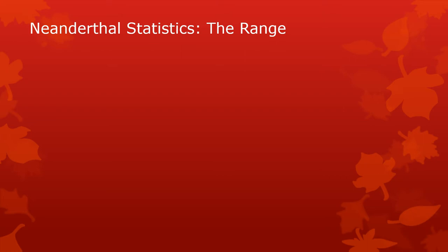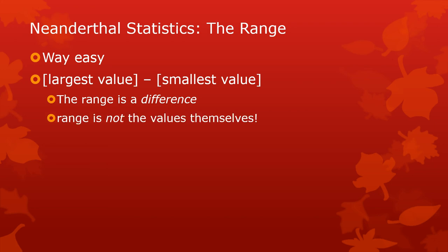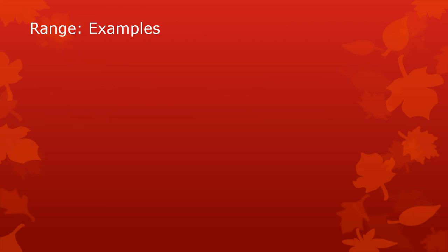The range is this Neanderthal statistic — it is really easy and really clunky, and it isn't terribly useful, but it can be useful on a basic level if you've got nothing else. It's just the largest value minus the smallest value. You can't use this with purely unordered categorical or nominal data, but you can use it with ordered data — ordinal data — you can say what the range is. Note that the range is a difference. Sometimes people will say the range was 10 to 35, but technically the range would be 25. It's the difference between the largest and smallest, not the values themselves. Technically in statistics, it's defined as the difference.